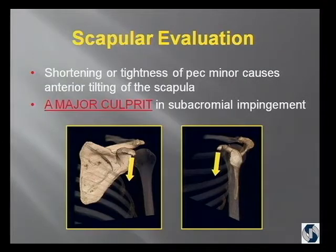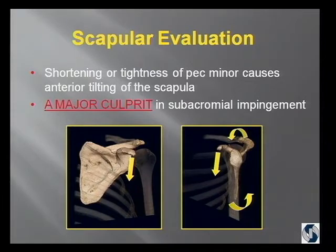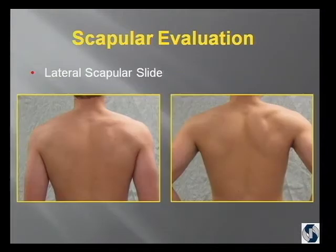One of the biggest problems I see is tightness of the pec minor, which causes an anterior tilt of the scapula, which causes a lot of — and frequently will cause — subacromial impingement.